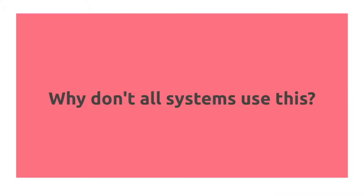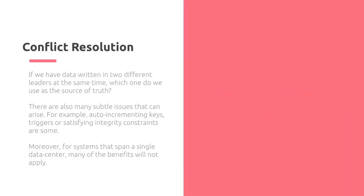So why don't all systems use multi-leader replication? If data is written to two different leaders at the same time, which one do we use as the source of truth? There are also many subtle issues that can arise, such as auto-incrementing keys, triggers, or satisfying integrity constraints. Moreover, for systems that span a single data center, many of the benefits will not even apply.